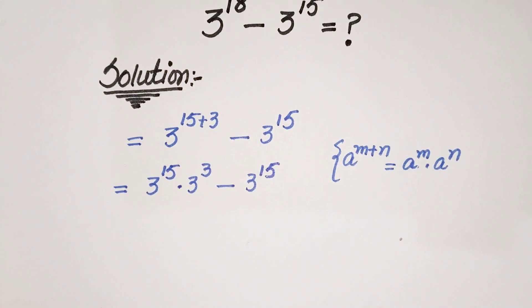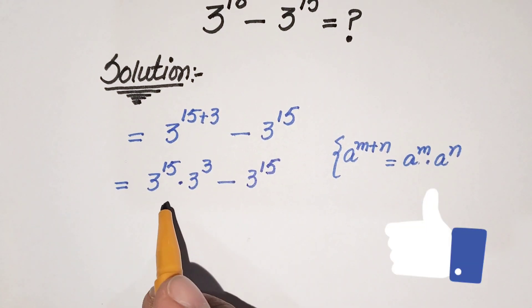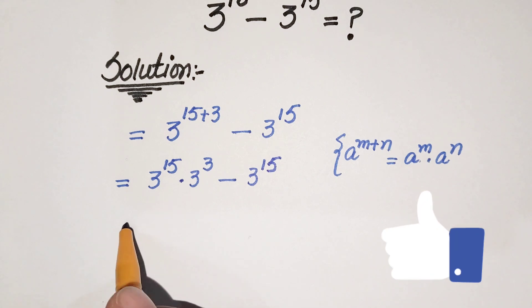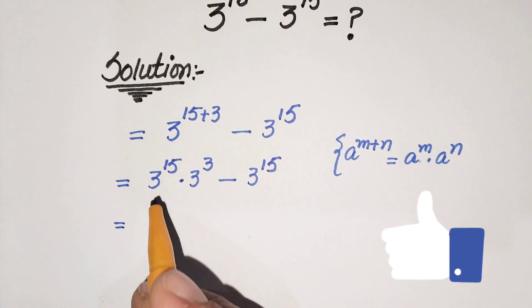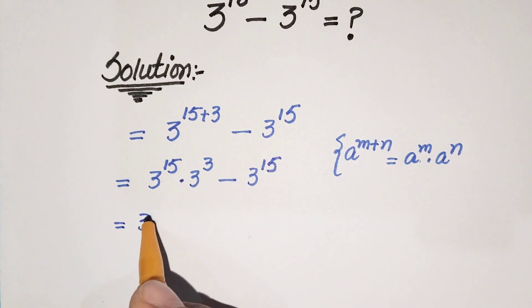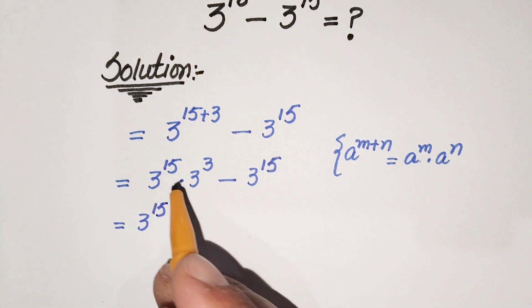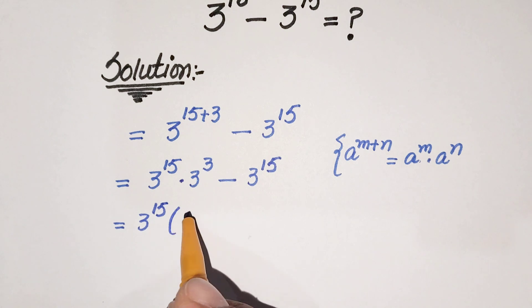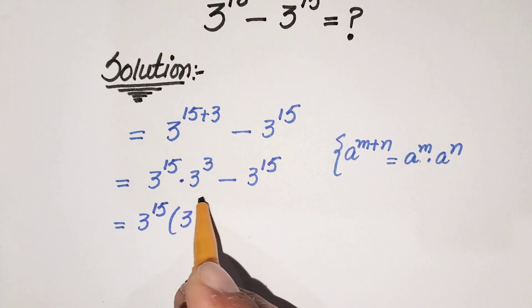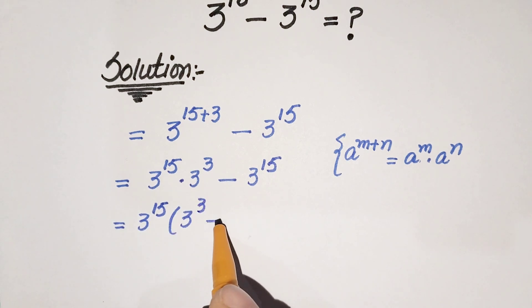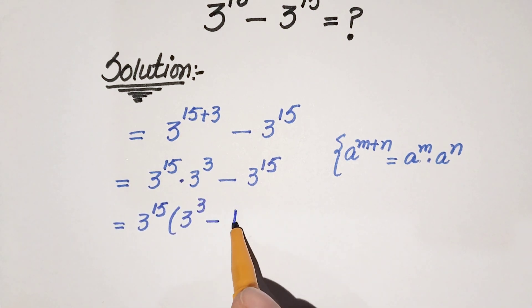Now we see that 3 raised to the power 15 is common. So we take out 3 raised to the power 15 as a common factor, leaving us with 3 raised to the power 3 and minus 1.